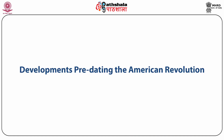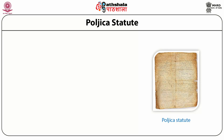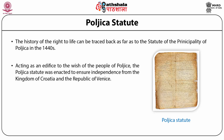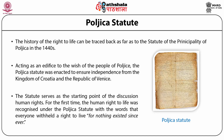Let's begin with the developments predating the American Revolution, starting with the Polaica Statute. The history of the right to life can be traced back to the Statute of the Principality of Polaica in the 1440s. Polaica was a region that straddled the Kingdom of Croatia and the Republic of Venice. The Polaica Statute was enacted to ensure independence from both, and for the first time in human history, the right to life was recognized under a written statute with the words that everyone held a right to live, for nothing existed since ever.